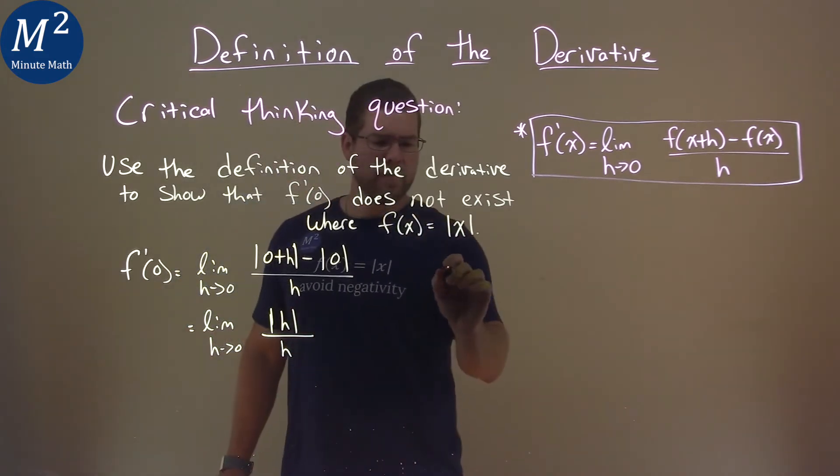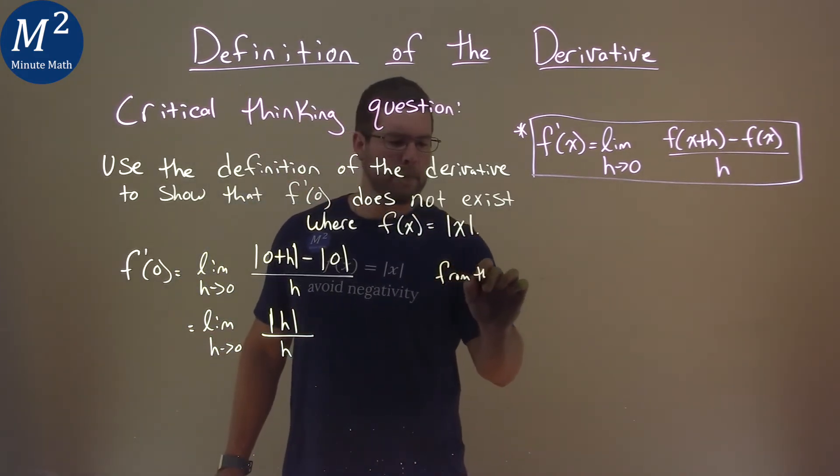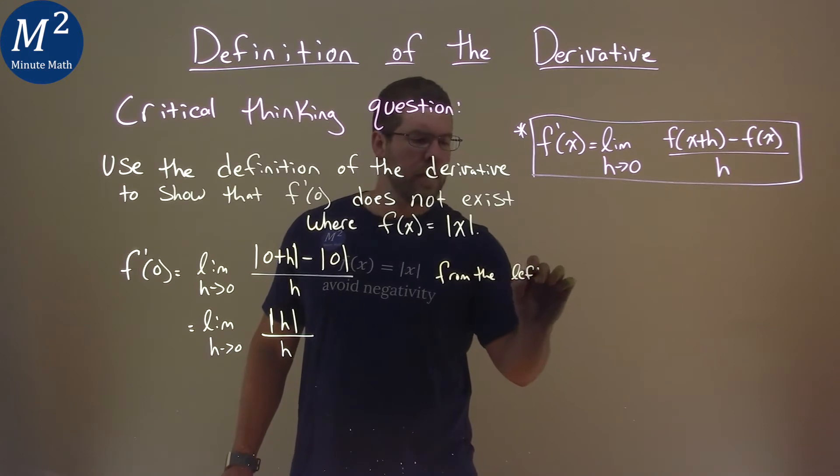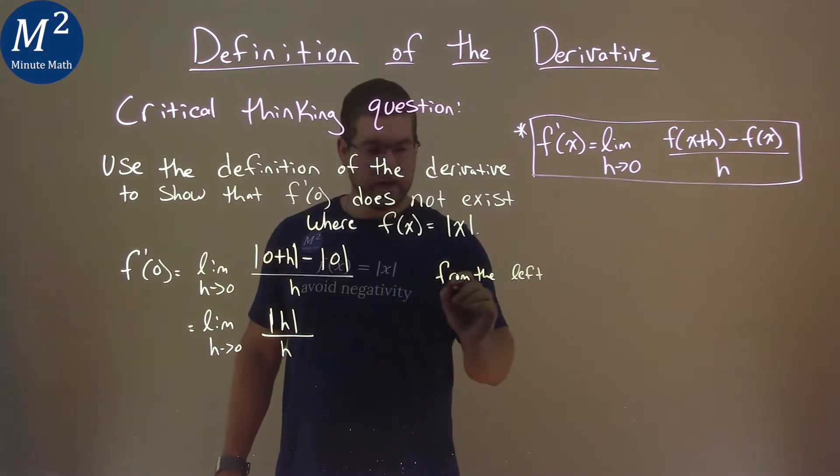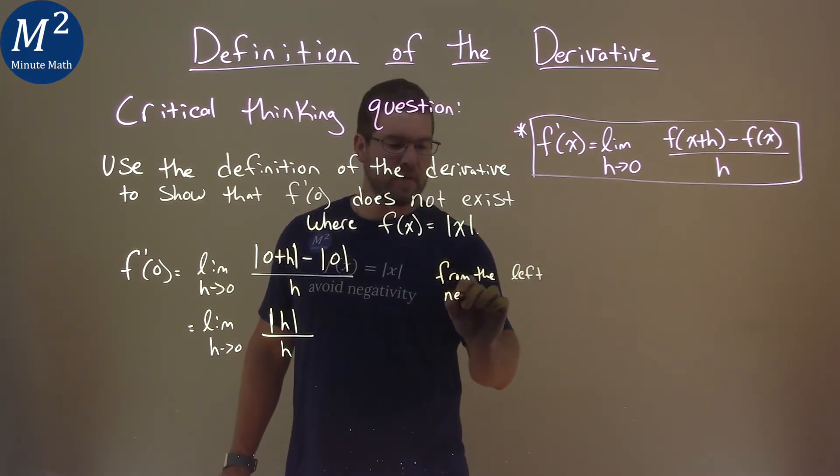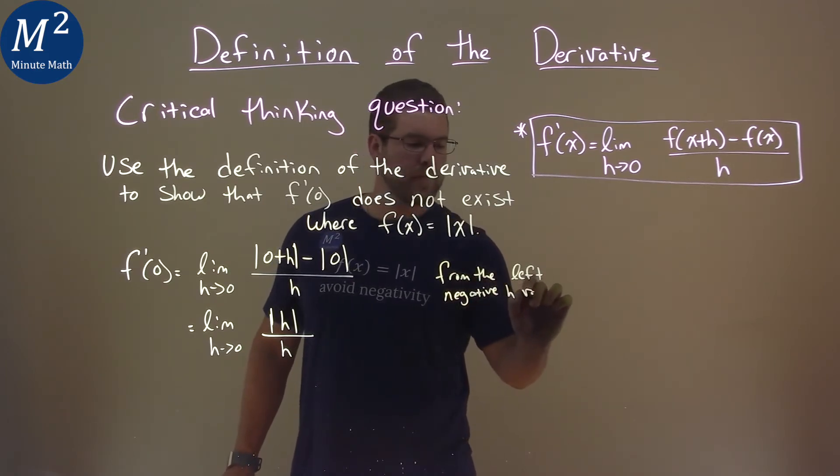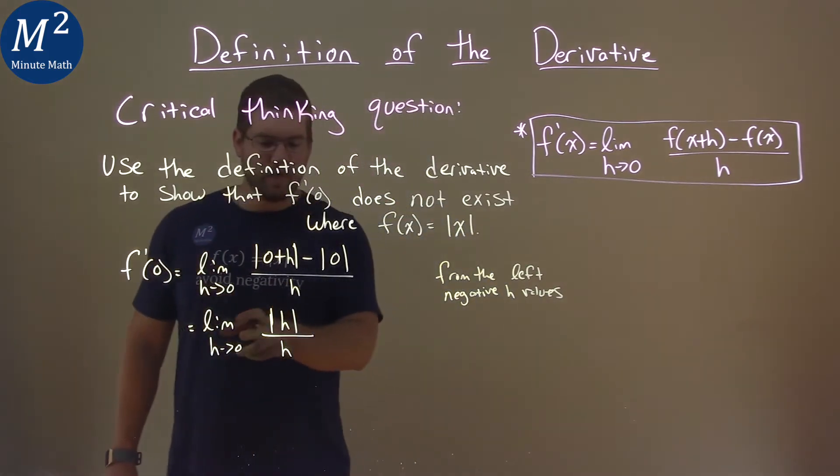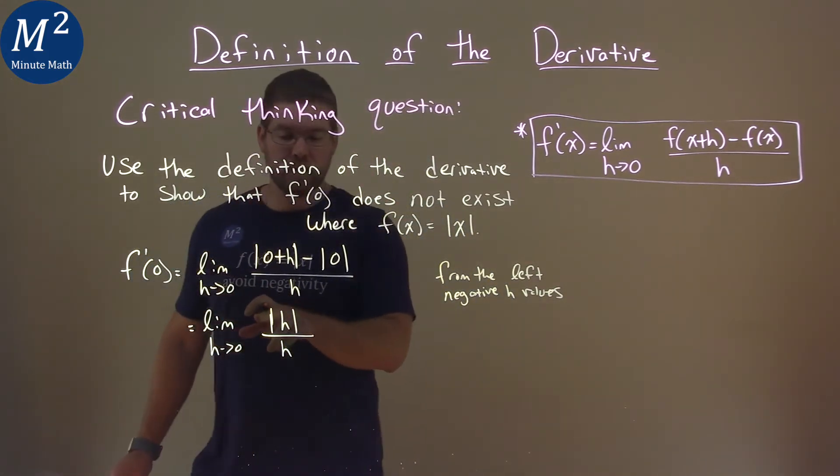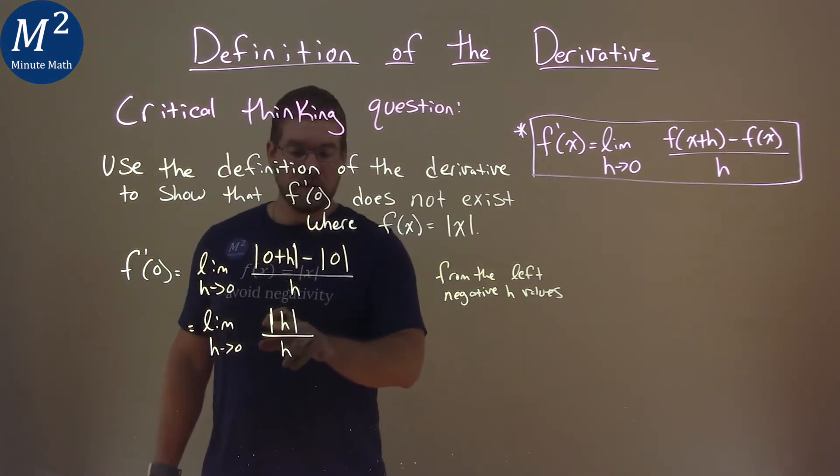So if we're going from the left, h value, we're going to have negative h values. What happens? So we have a negative h value that goes in, right? So negative h value that goes in.